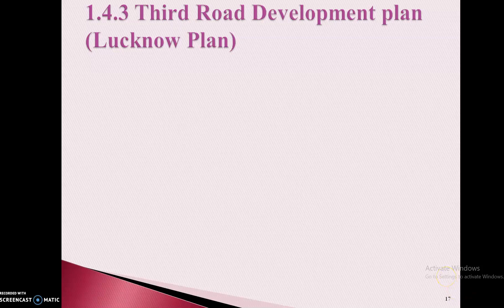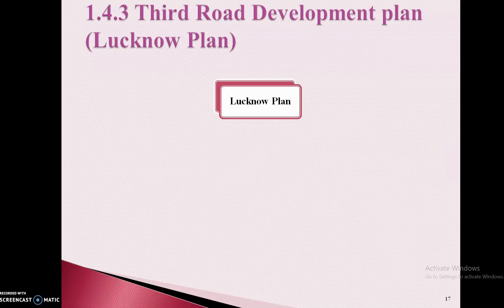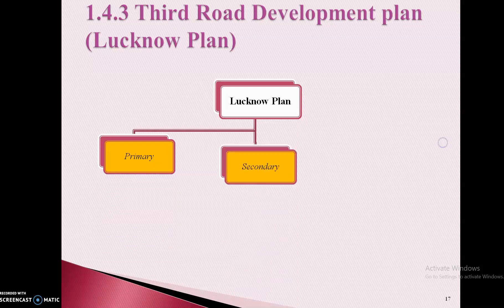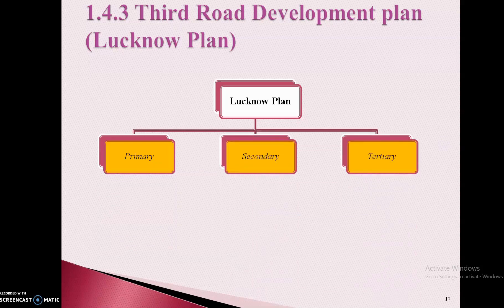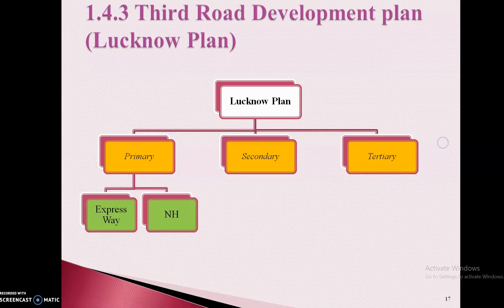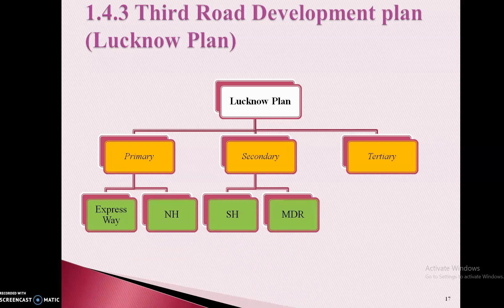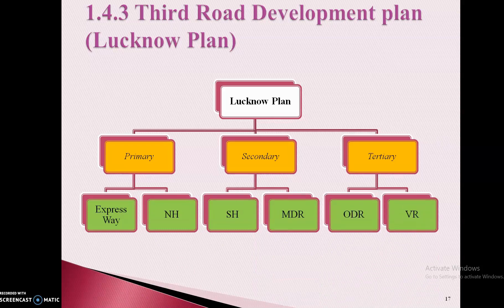Hello everyone. As we seen in last lecture, we stopped over the slide of the Third Road Development Plan. In this plan, we saw a flowchart which shows how the roads are distributed. There are basically three categorizations: primary, secondary, and tertiary. Under primary, expressways and national highways are considered. In secondary, state highways and major district roads are considered. In tertiary, other district roads and village roads are considered.